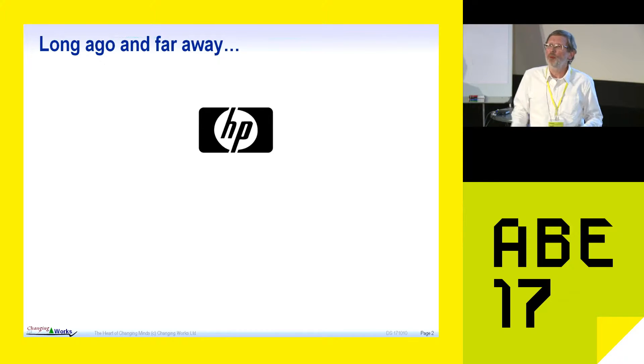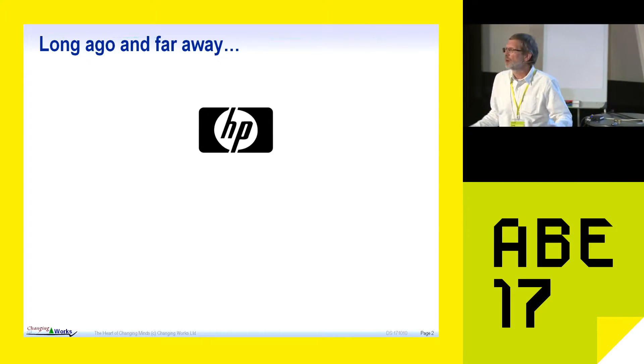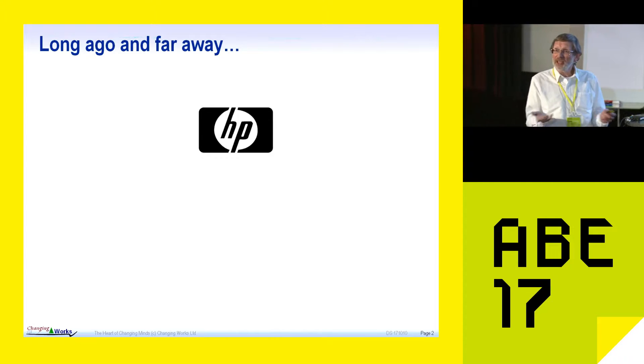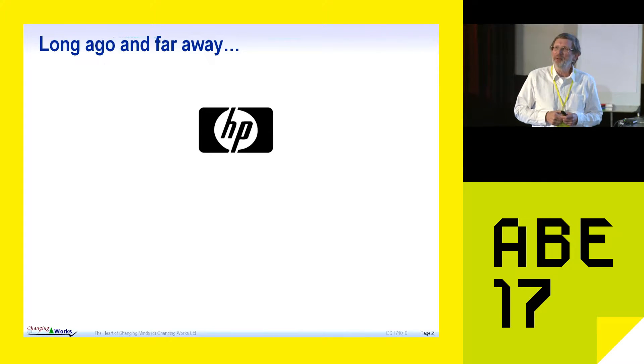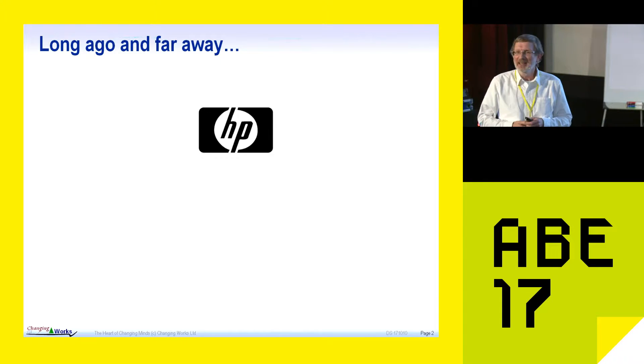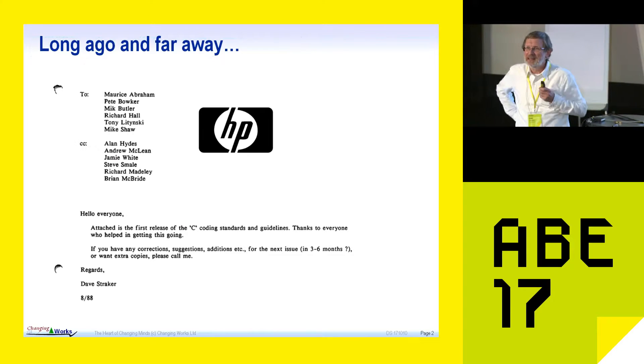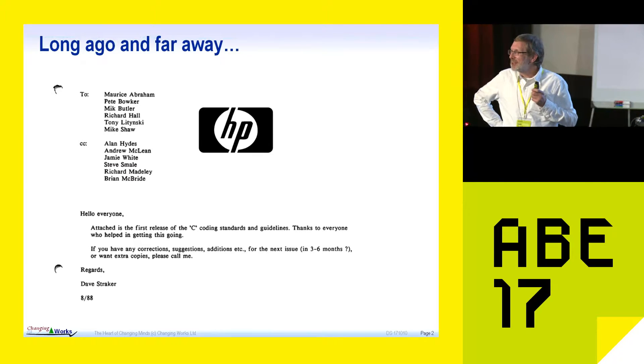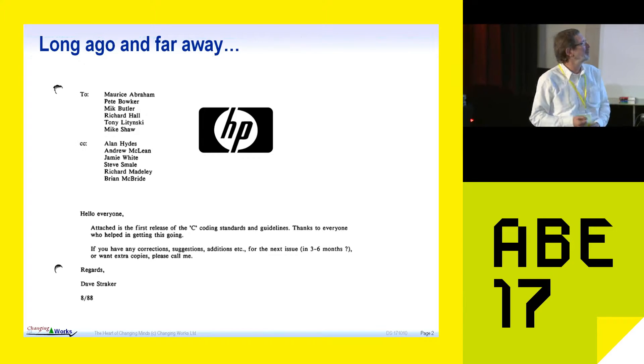And my first job was to set up some coding standards. So I went around, did the kind of bright thing. I spoke to everybody. I looked at the internet of the day. Comp.lang.c, anybody remember that one? Long time ago. But anyway, that was Usenet before Mosaic. So anyway, we came up with the standards. 44 pages. I was a good engineer. I could make them nice and long. And I sent out a message. And here's the email. An email from 1988. And I said, okay, guys, here we go. Here's your coding standards. I've spoken to you all. This is great. This is a committee of people and so on.